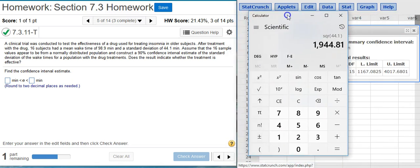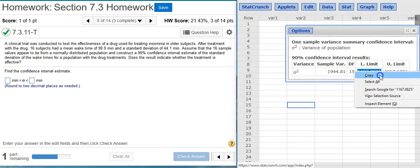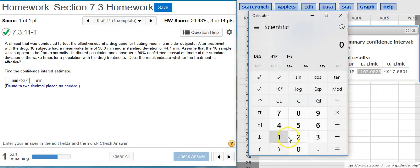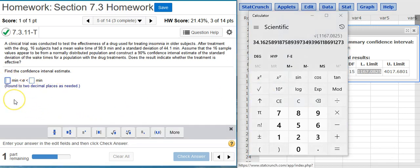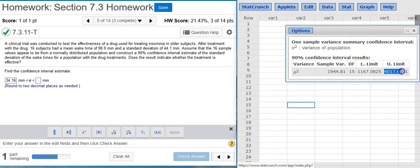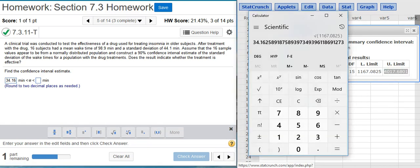So if I bring my calculator back up, I'm going to take these values here. I'm going to put them back into my calculator, take the square root, round to two decimal places. So I'll remember my lower limit will be 34.16. Do the same thing with the upper limit, and I get 63.39. Nice work!